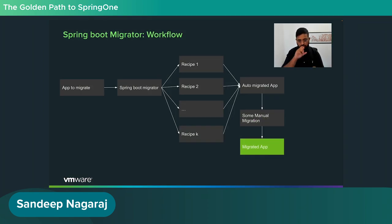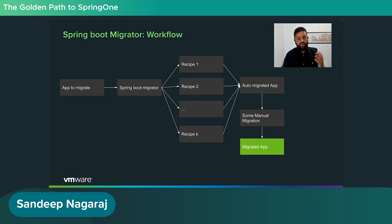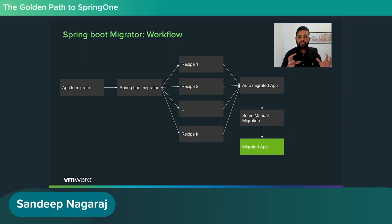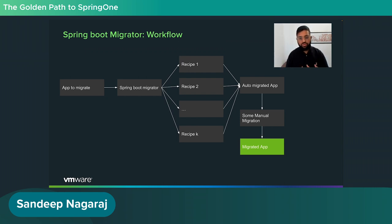Before we begin the actual demo, I'd like to look at the workflow of Spring Boot Migrator 2. You will have an app to migrate, and you feed that into Spring Boot Migrator 2. It reads through the app, recognizes patterns, and provides you recipes. When you apply these recipes, you get an automated migrated app — though sometimes you still need some manual effort to get a fully migrated app.